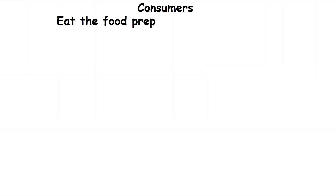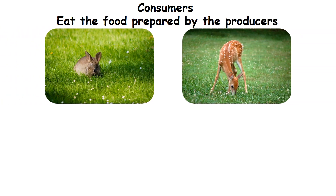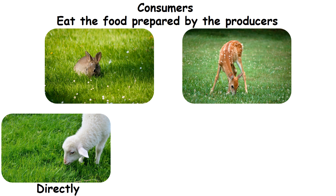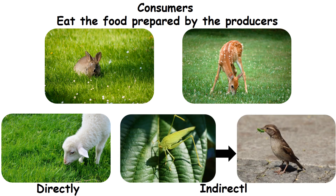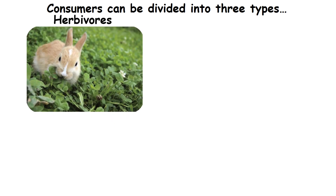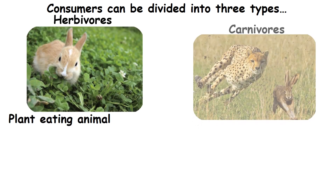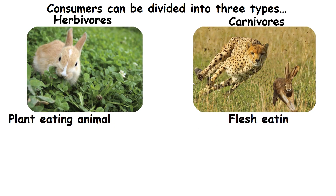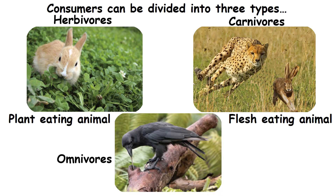The living things that eat the food prepared by the producers are called consumers. Most living things depend directly or indirectly on producers for their food. Consumers can be divided into three types based on their food: herbivorous (plant-eating animals), carnivorous (flesh-eating animals), and omnivorous (both plant and flesh-eating animals).